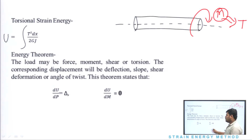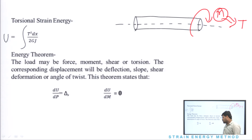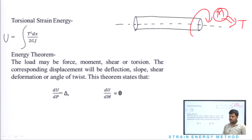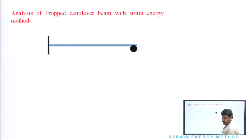Hum strain energy mein teen tarikhe ke questions dekhenge: ek, hum dekhenge simple indeterminate structure — isko bol sakte hain propped cantilever. Doosra, continuous beam. Aur teesra, hum baat karenge frame ki. So, frame ko hum analyse karne ki, sabse pehle hum baat karte hain propped cantilever beam ki.